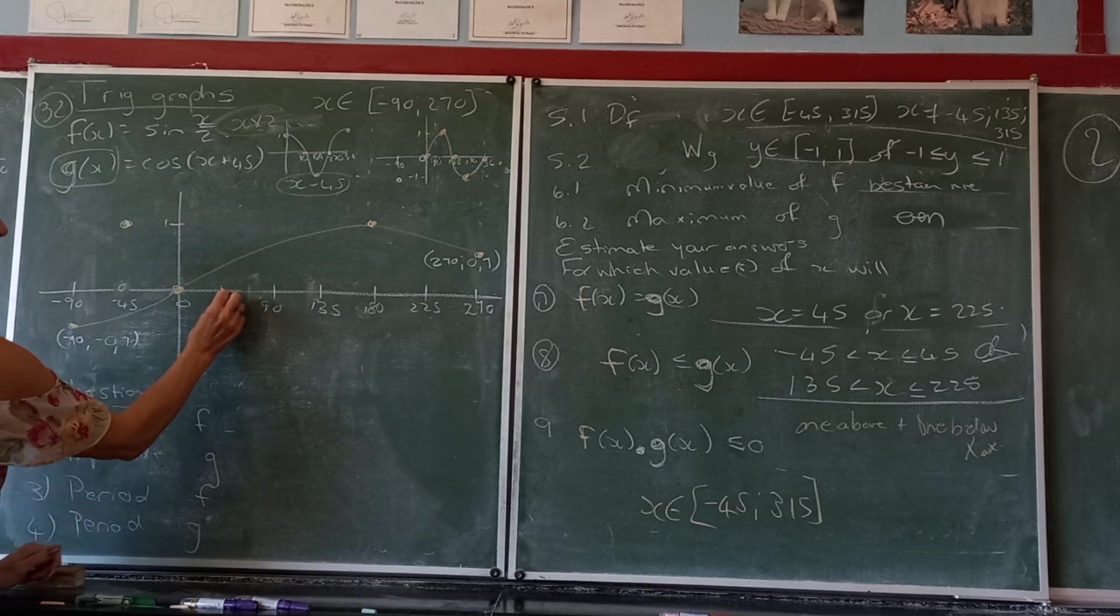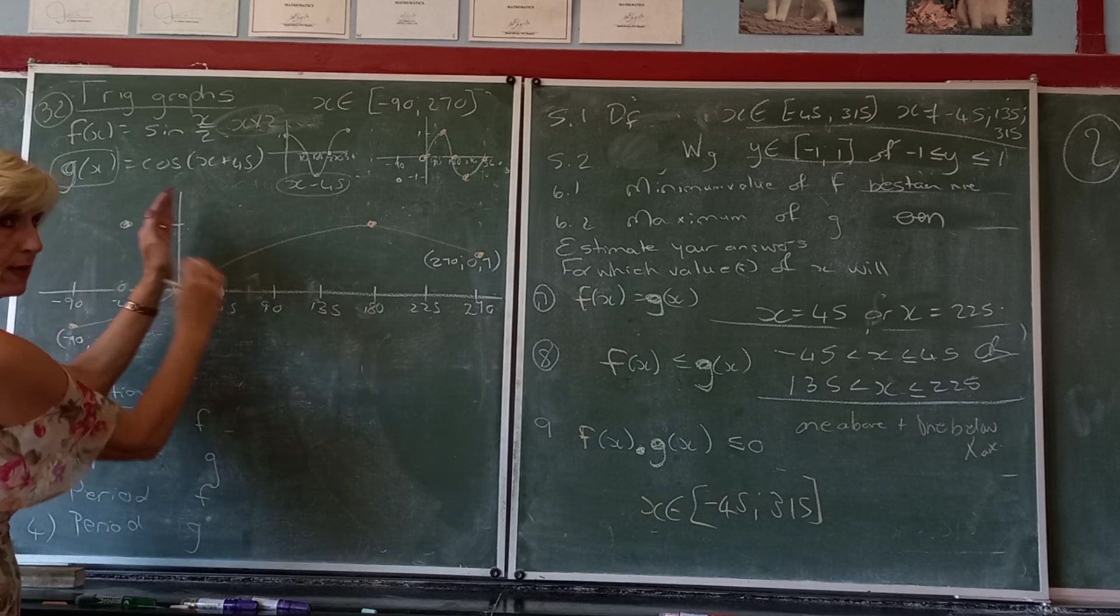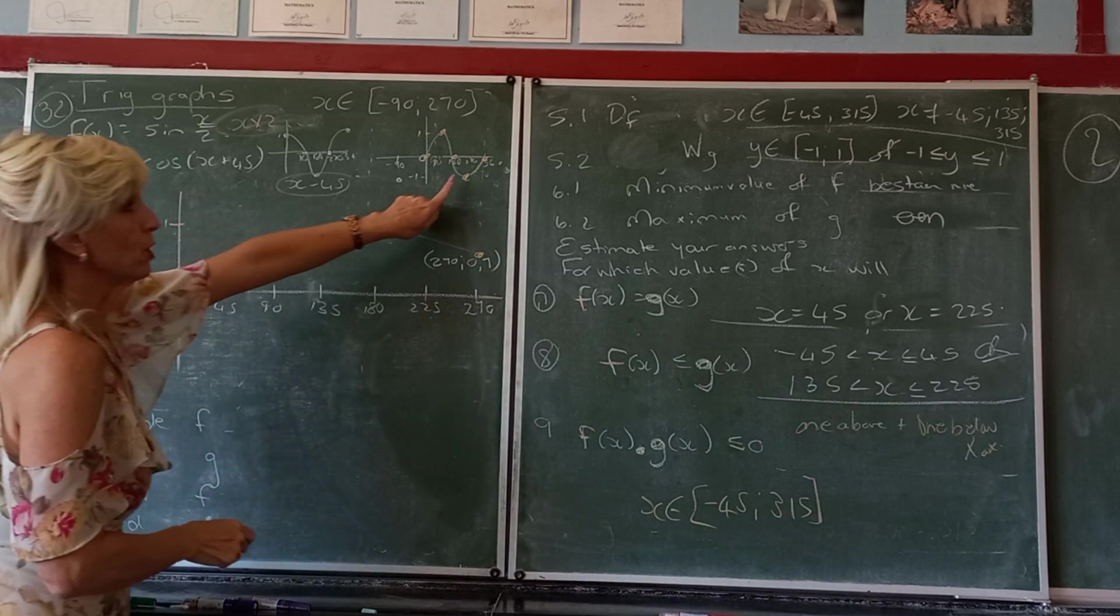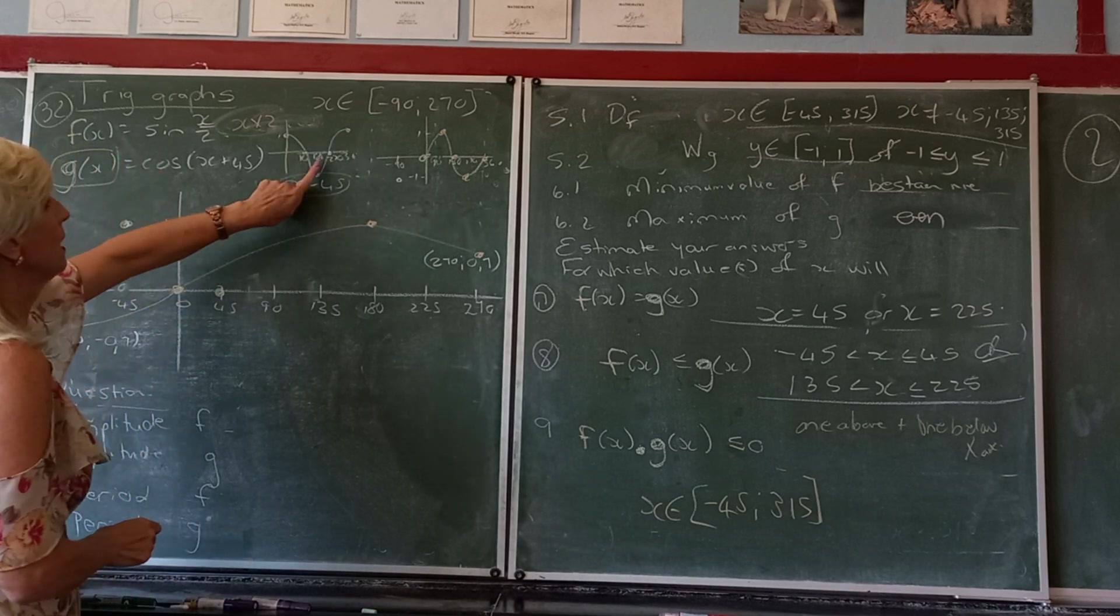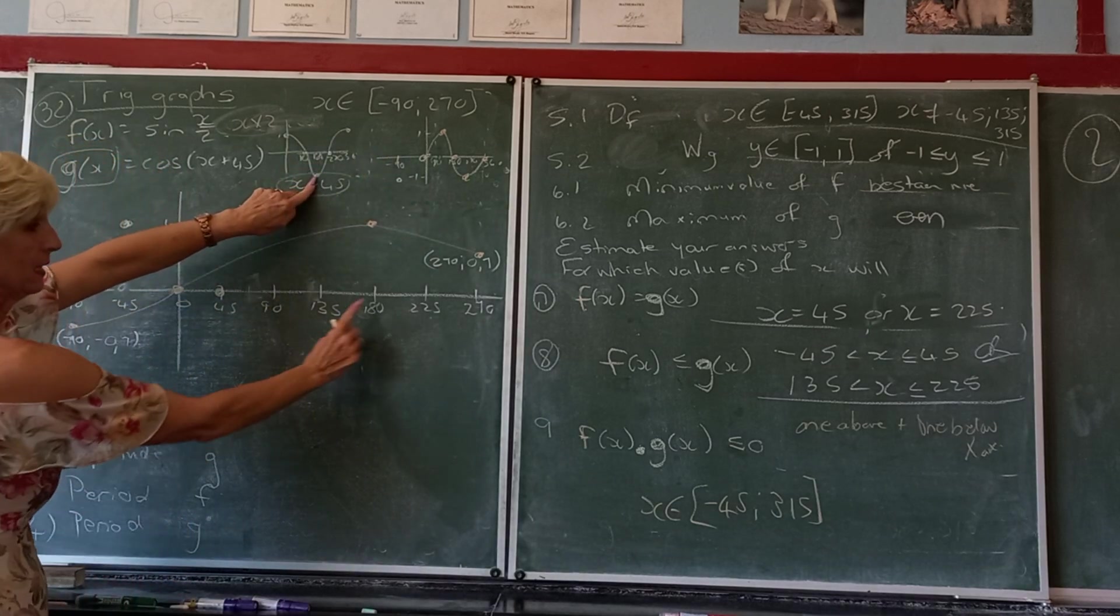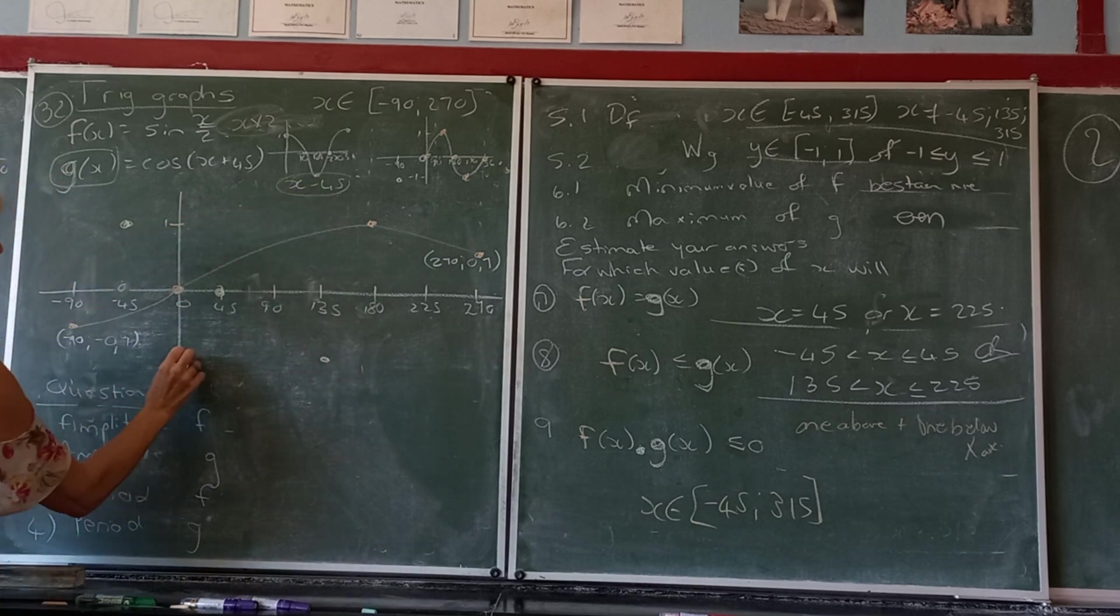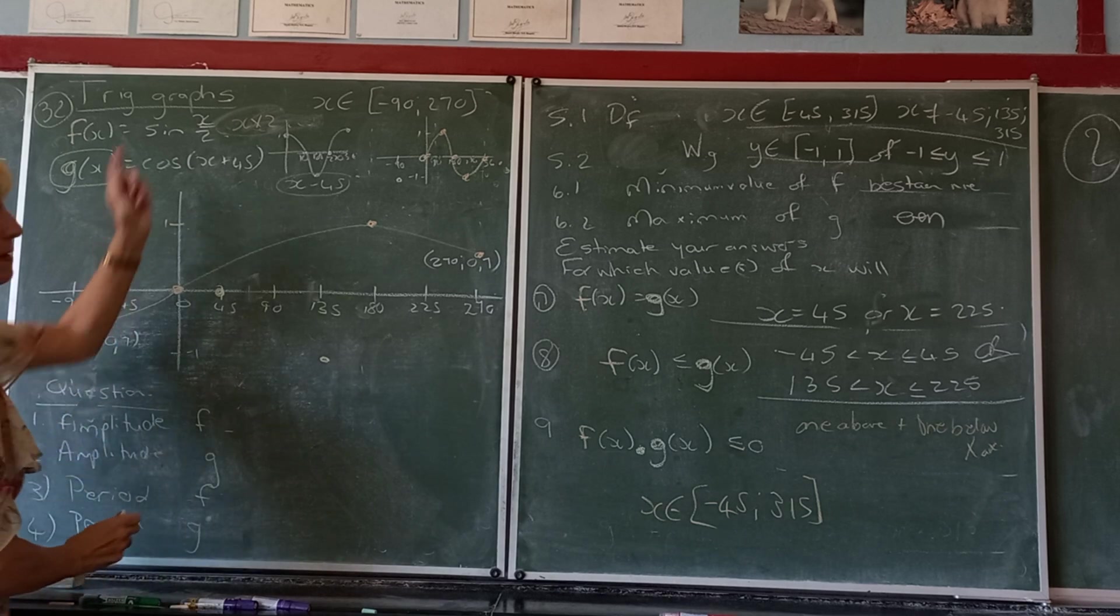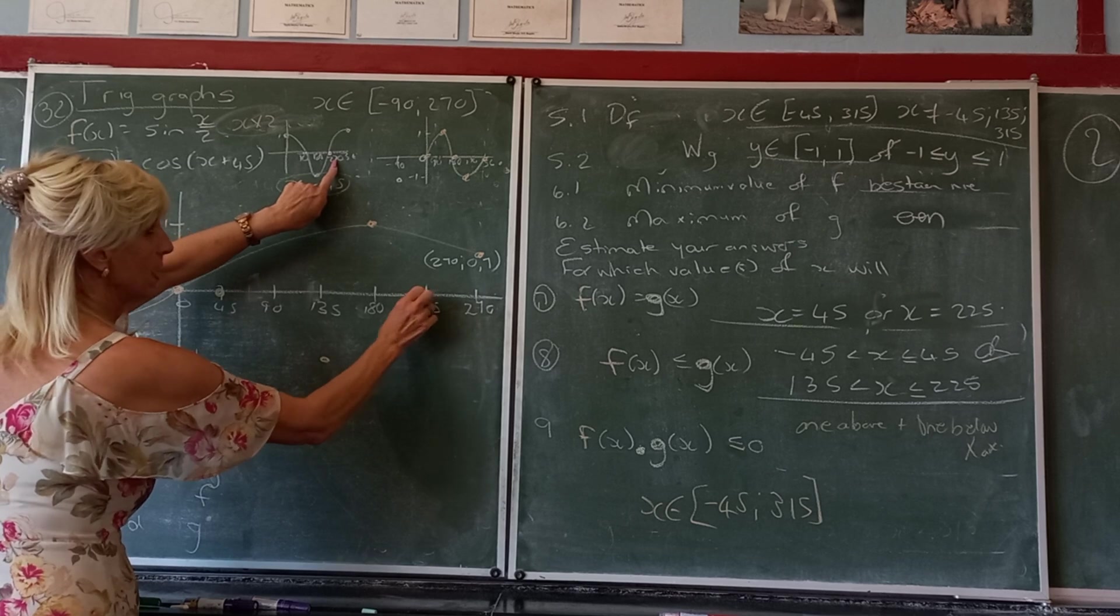Next point, which used to be at, I'm busy with the cos graph I'm sorry, it used to be at 180, negative 1 is now going to be at 135, negative 1. Next one should have been at 270, it's now going to be at 225. And the next one should have been at 360, it's now going to be at 315, which is somewhere on the other board again.